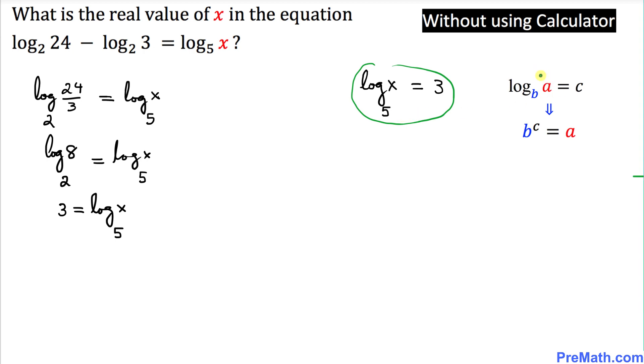So we're going to be using this fact, converting from logarithmic form to exponential form. So this could be written as—in this case, again, our base is 5—so we can write this one as 5 power 3 equal to x.